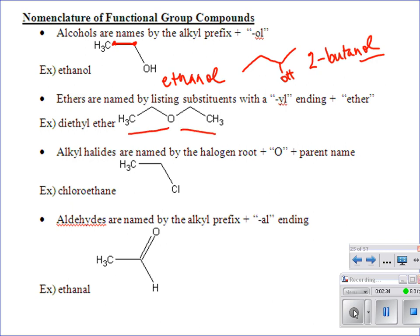Ethers have the structure R-O-R — two groups hanging off of an oxygen. You name the two groups as substituent groups with -yl endings, put them in alphabetical order, and add the word 'ether' after it. If we have an ethyl and an ethyl, it's diethyl ether. With a methyl on the left and an ethyl on the right, it's ethyl methyl ether — alphabetical order, spaced out.